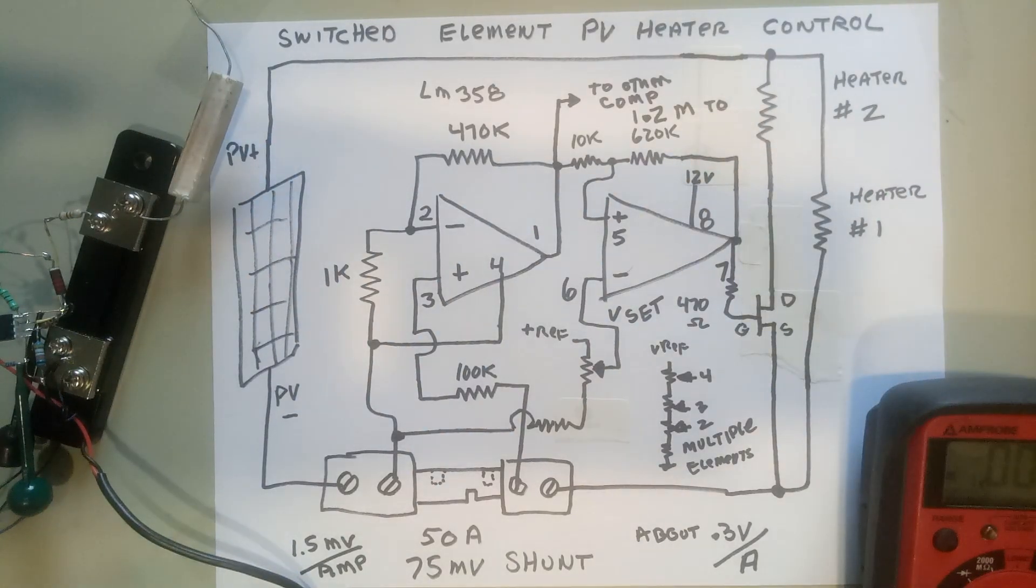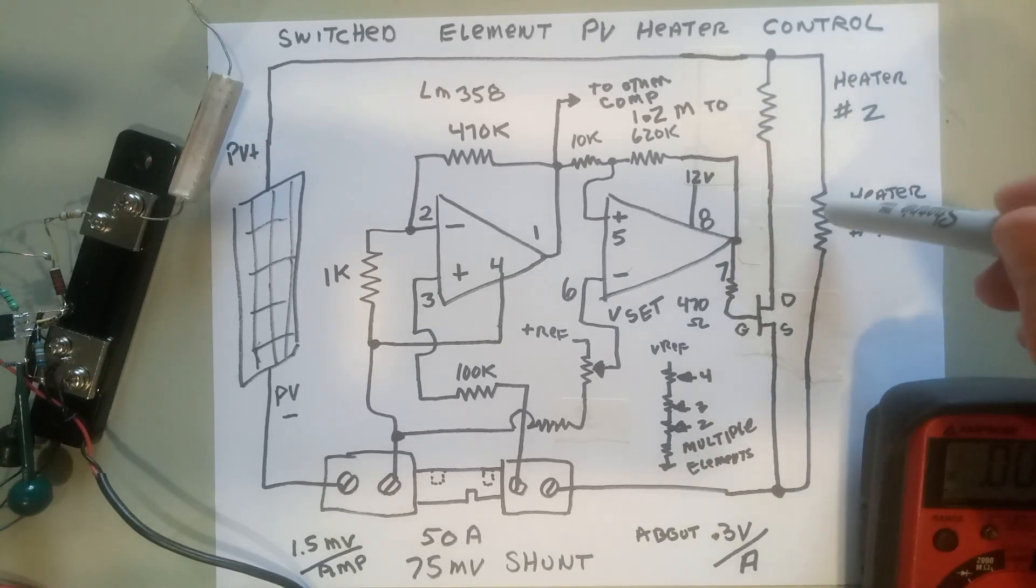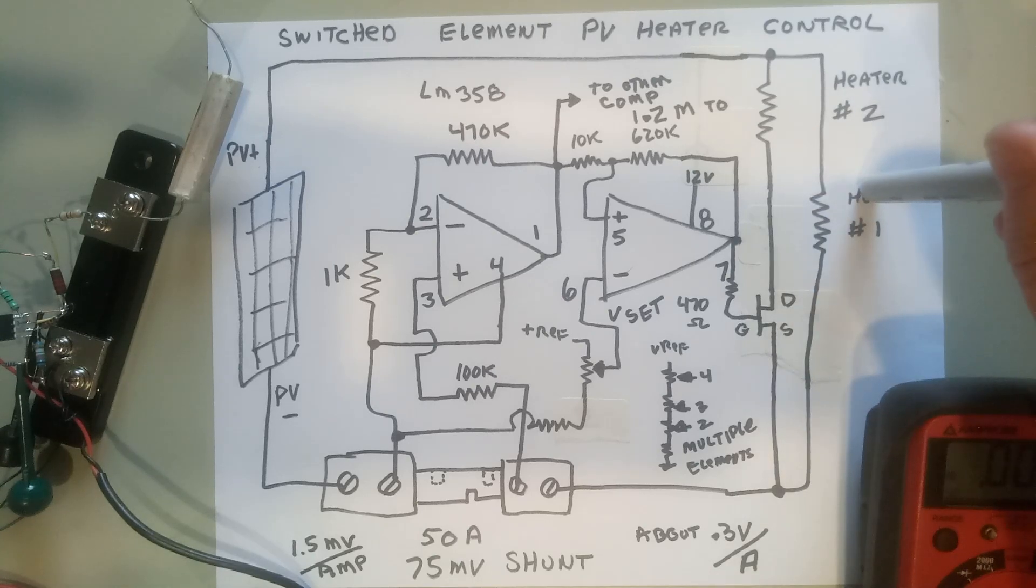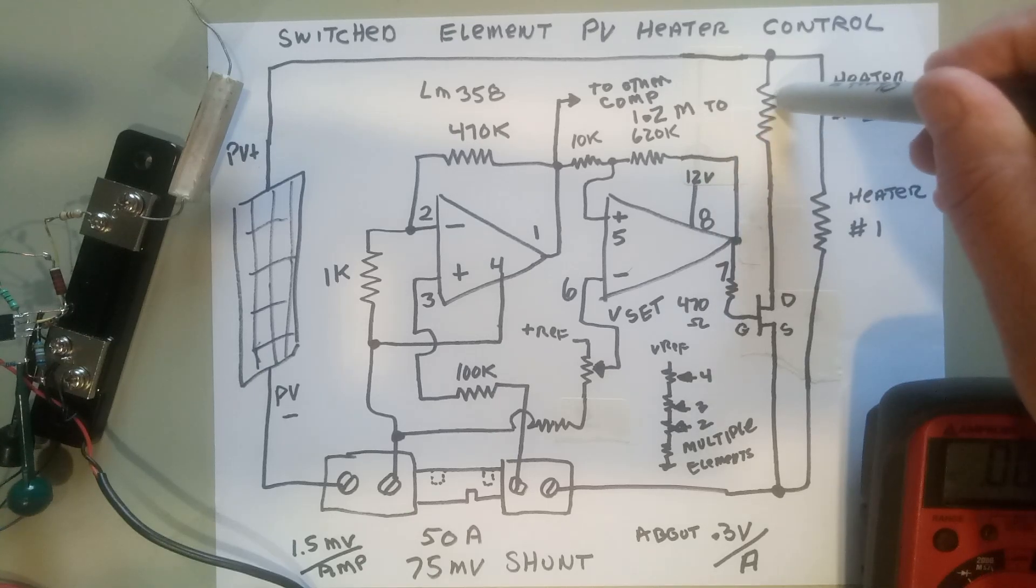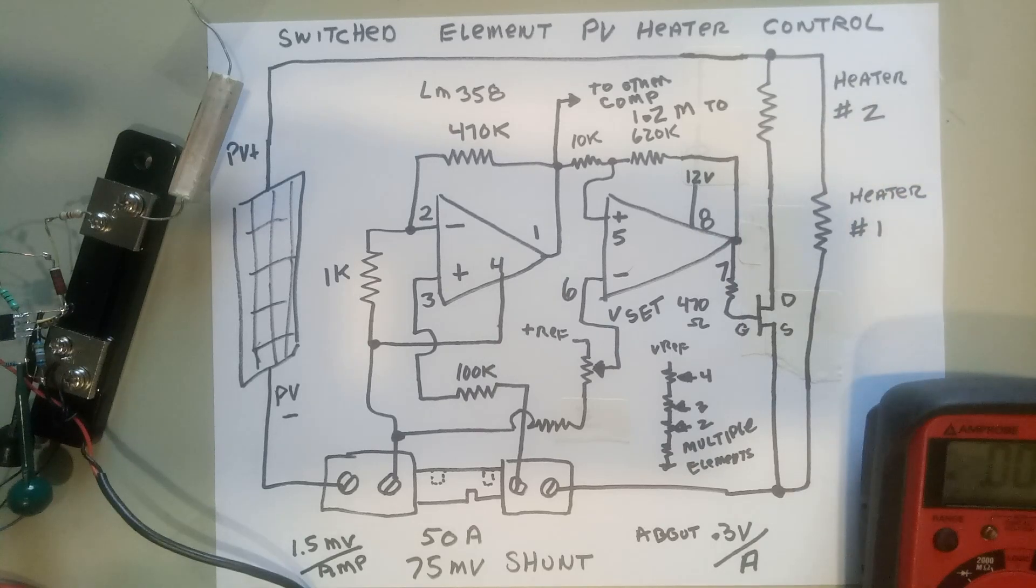This is a really simple control system where you can have two water heating elements. The first one is connected all the time, and this could also be an MPPT controller if you want to extend the current range. The first heater is on all the time, but the second heater switches in when the circuit sees more than a set amount of current.